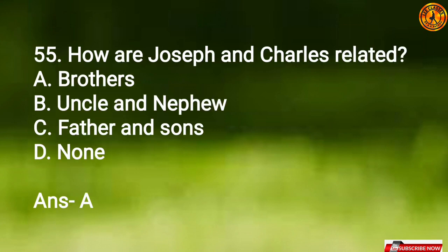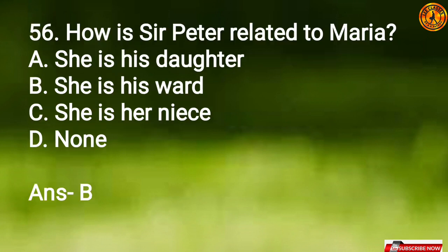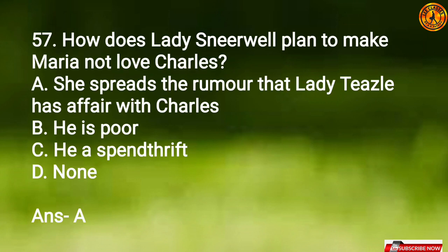Question 55: How are Joseph and Charles related? Option A, they are brothers. Question 56: How is Sir Peter related to Maria? Option B, she is his ward. Question 57: How does Lady Sneerwell plan to make Maria not love Charles? Option A, she spreads the rumour that Lady Teazle has an affair with Charles. Question 58: With whom does Lady Sneerwell plot to make Maria not love Charles? Option B, Joseph.